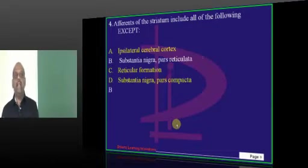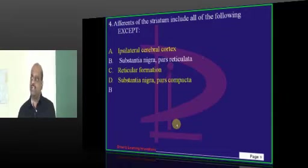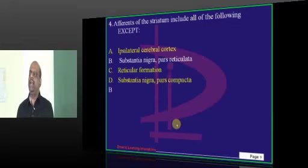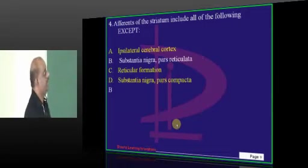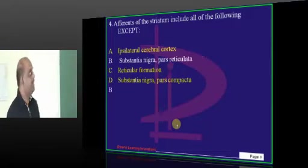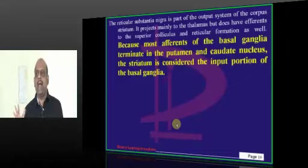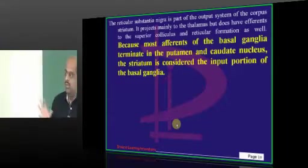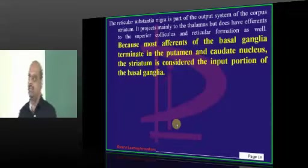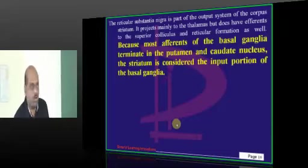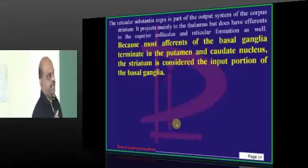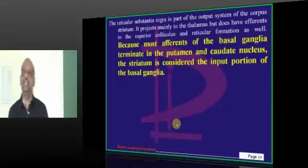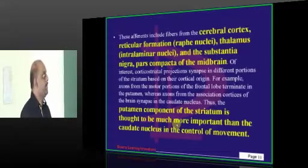The direct and indirect pathway — which is inhibitory, which is stimulatory, which is cholinergic, which is glutaminergic — we discussed it in great detail in our regular neurology videos. For now, most of the afferents of the basal ganglia reach the putamen and caudate. That is the reason the striatum is called the input section of the basal ganglia.